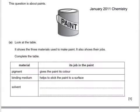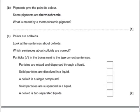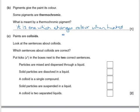This question is about paints. Look at the table — it shows the three materials used to make paint, their jobs, and asks you to complete the table by stating the job of the solvent. We might say it thins the paint, making it easy to spread. Pigments give the paint its colour. Some pigments are thermochromic — what is meant by a thermochromic pigment? This is covered in a later tutorial, but the answer is that it is one which changes colour when heated or cooled.